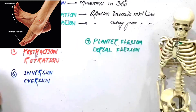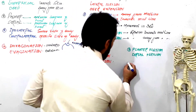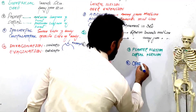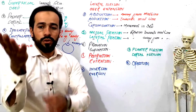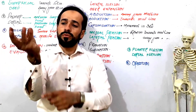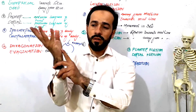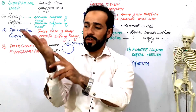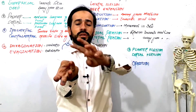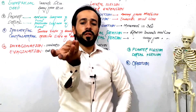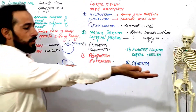The last movement is called opposition. When the thumb comes towards the little finger — digiti minimi — this is called opposition. So when your thumb comes and meets with your digiti minimi, this is called the opposition movement.